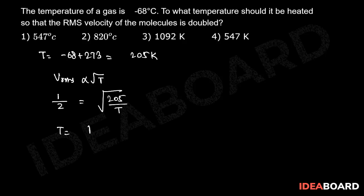So T equals 4 times 205, which is equal to 820 Kelvin. Therefore, the temperature is equal to 547°C. Option 1 is the correct answer.